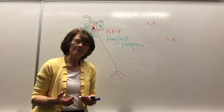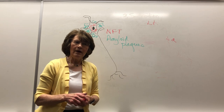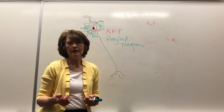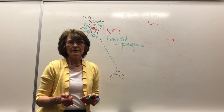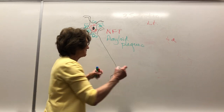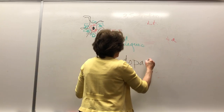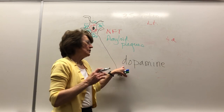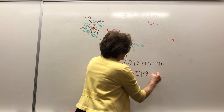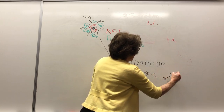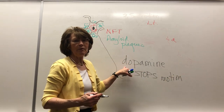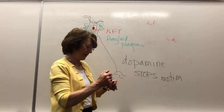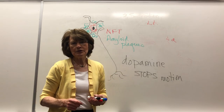The next one is Parkinson's disease. What is the neurotransmitter they're deficient in? Hopefully you thought of dopamine. What does dopamine do? Dopamine stops motion. So if they don't have sufficient dopamine, the tendency is that the fingers keep going, or the shuffling keeps going. We see that with Parkinson's.